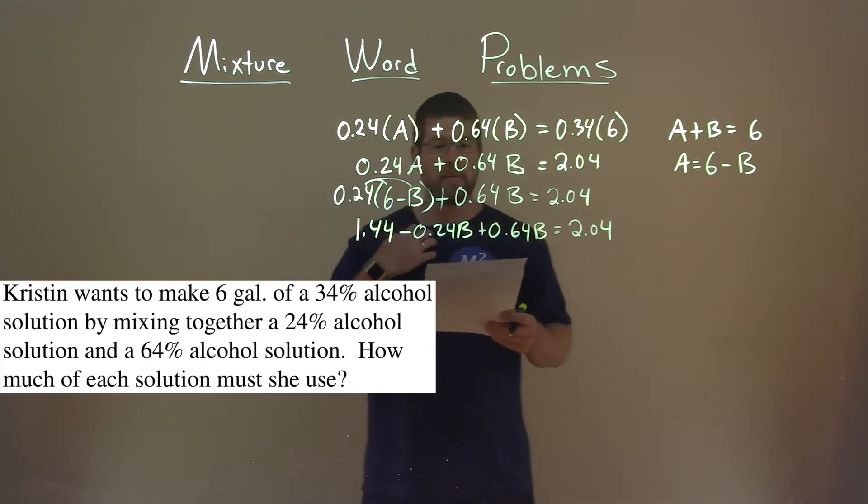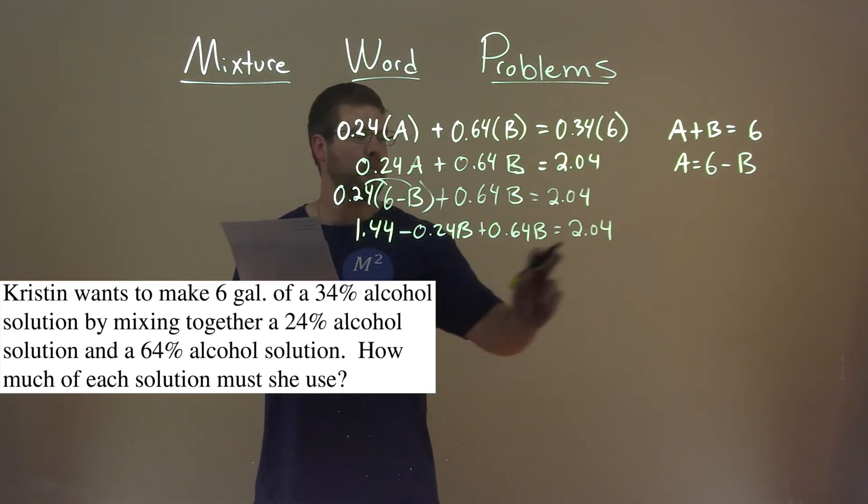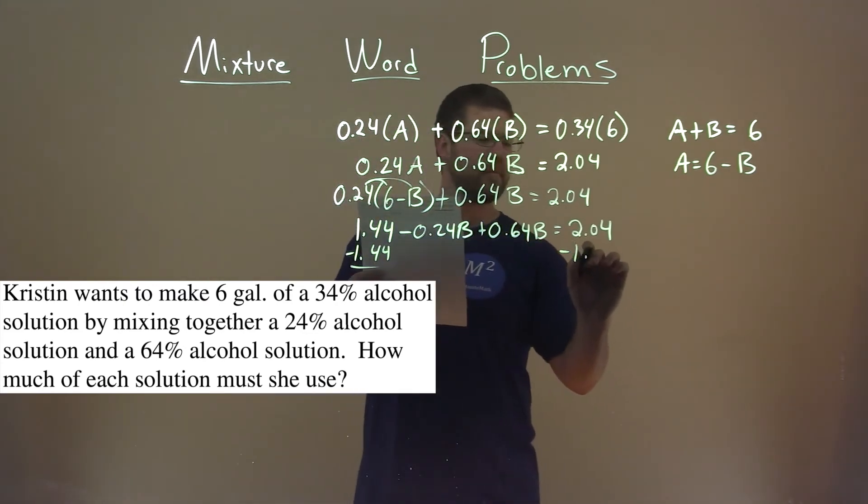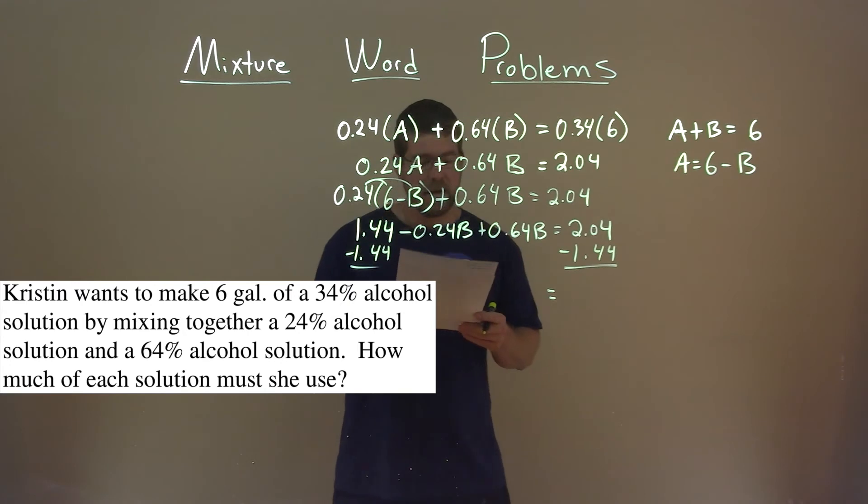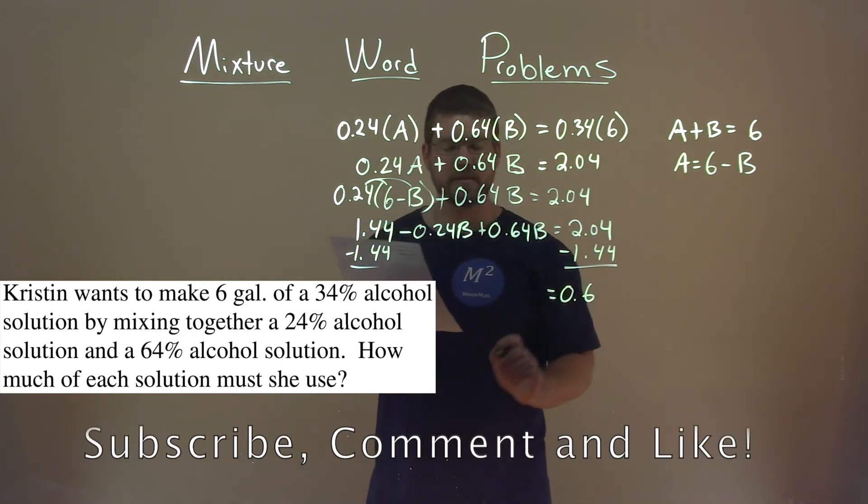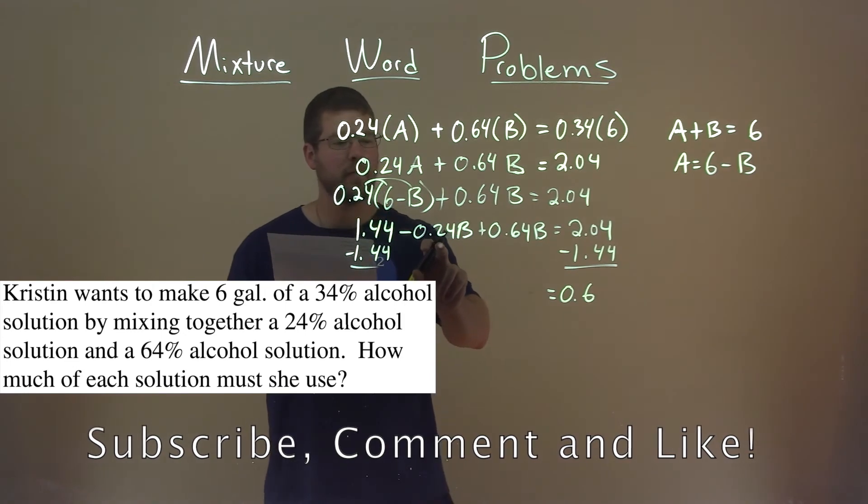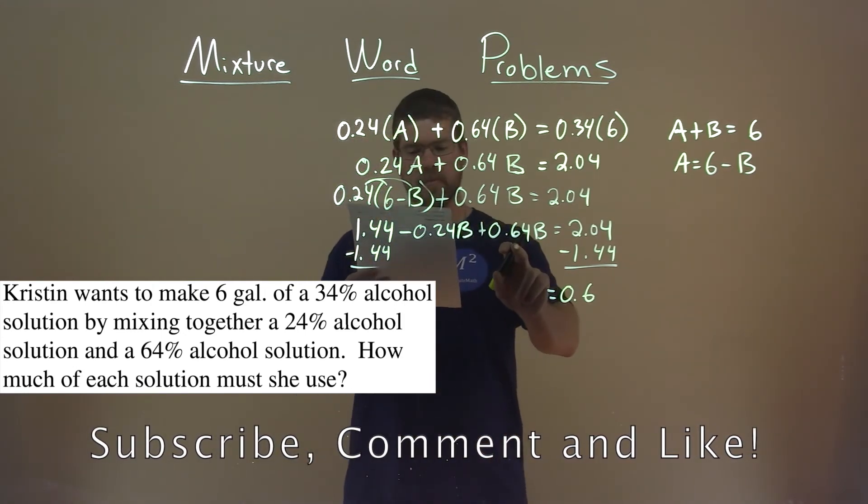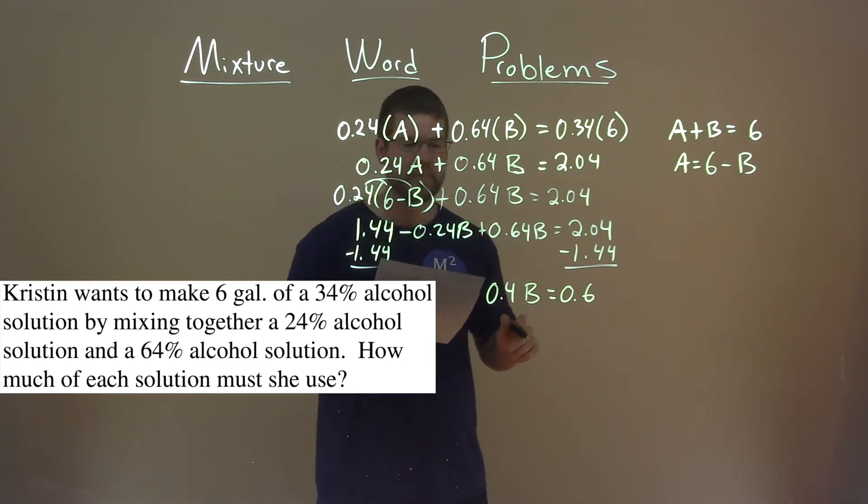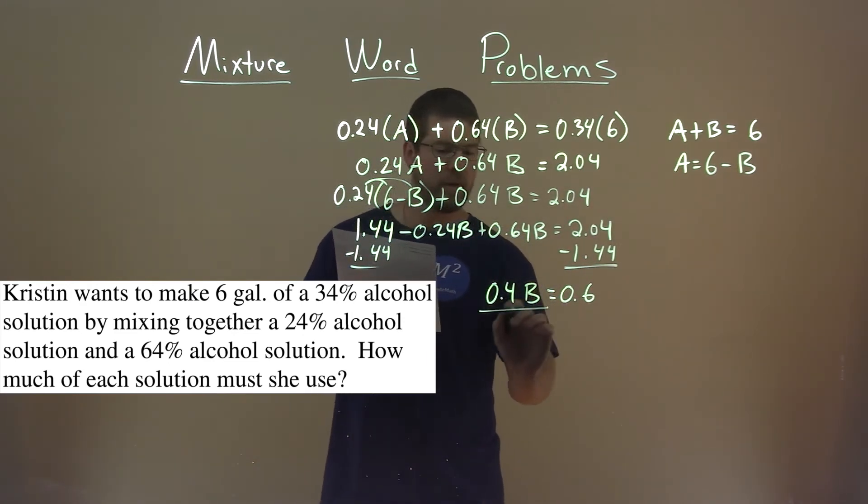Now let's go combine like terms. So let's bring the regular number over here. So we subtract the 1.44 to both sides. And that equals 2.04 minus 1.44 is 0.6. Negative 0.24B plus 0.64B is 0.4B. I divide both sides by 0.4.